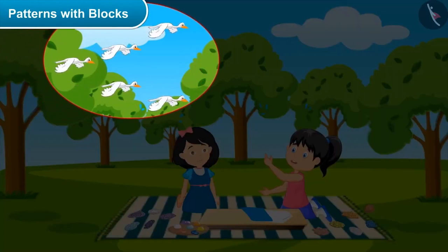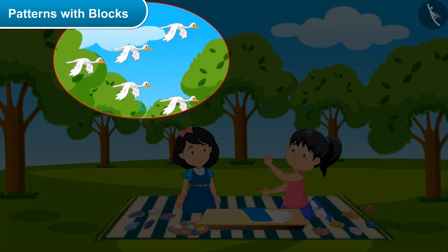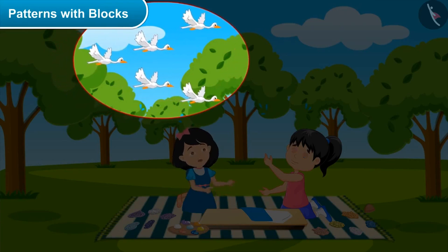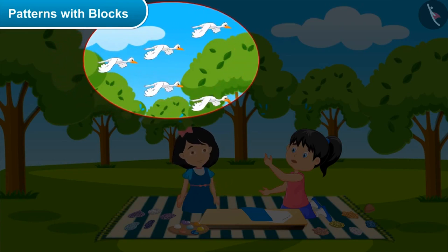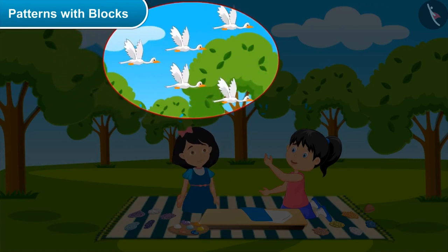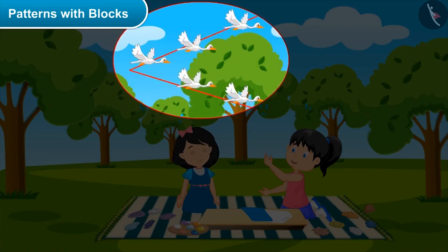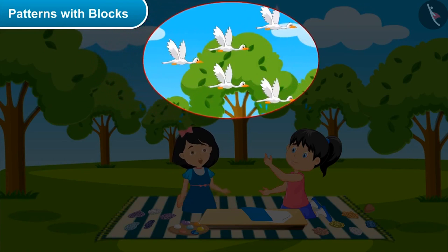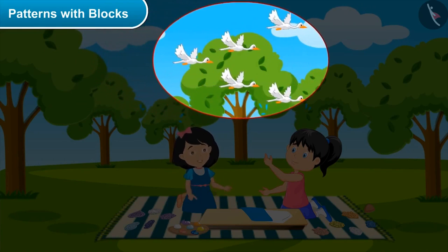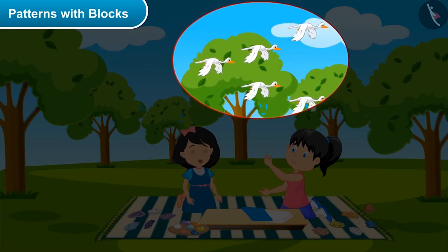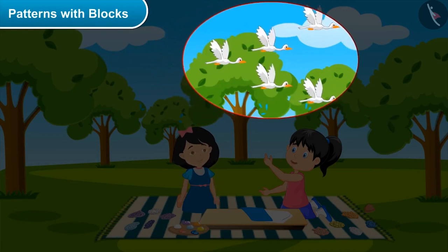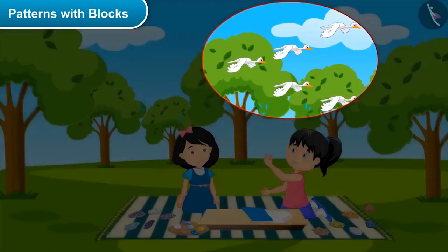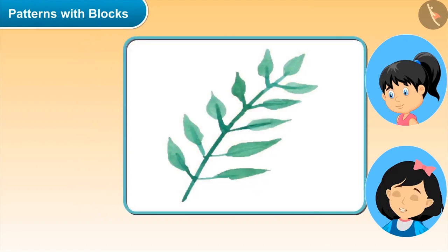Misty: wow, so beautiful! Sister: yes, could you see something special in it? Misty: yes, they are flying in a V-shape. Sister: absolutely right, they are all flying in a V pattern. Now look at this branch — can you see a pattern in this?